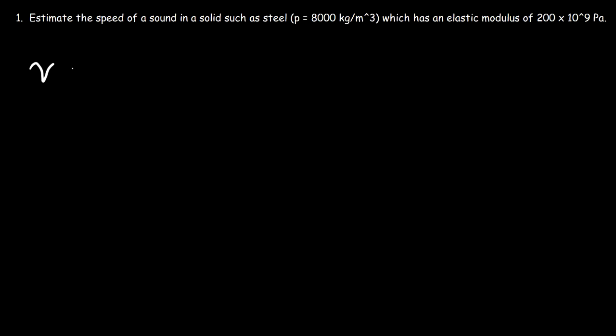So let's start with this problem. Estimate the speed of sound in a solid such as steel, which has an elastic modulus of 200 times 10 to the 9 pascals. The speed of sound is the square root of Young's modulus — which is the same as the elastic modulus — divided by the density of the solid.